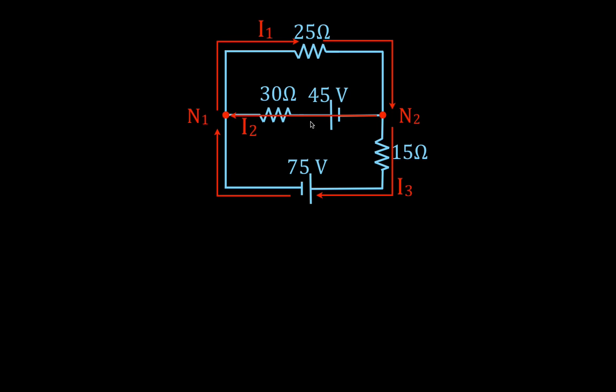Step one is to identify the nodes, step two is to identify the currents, and step three is to identify the direction we're going to go around each of the loops to apply Kirchhoff's voltage rule. We have two loops — this loop up here and this loop down here — and we're going to go around each in the clockwise direction. We also have an outer loop, but we do not need it to solve this problem.